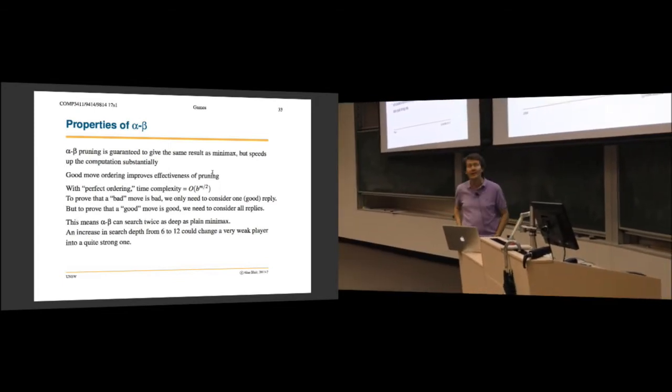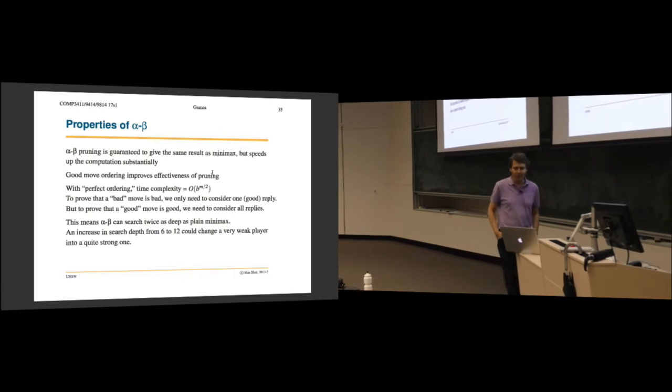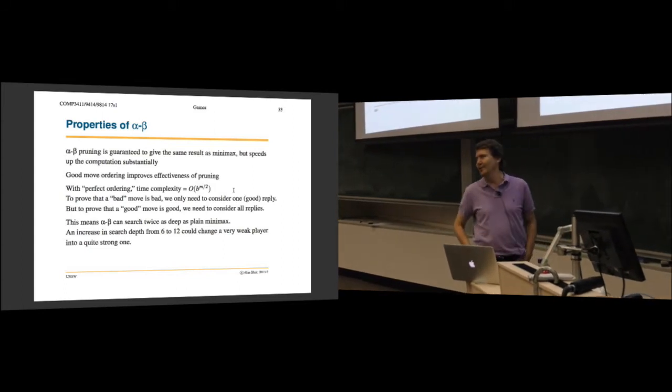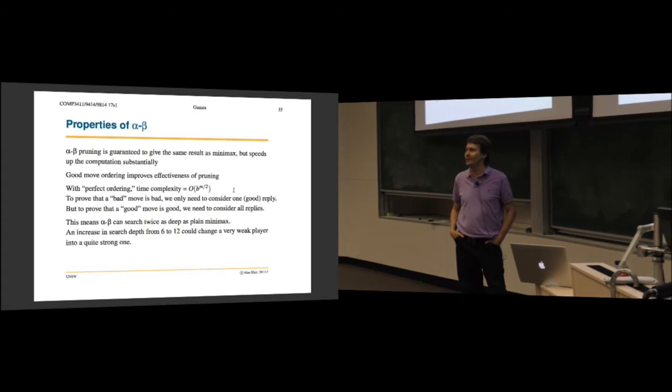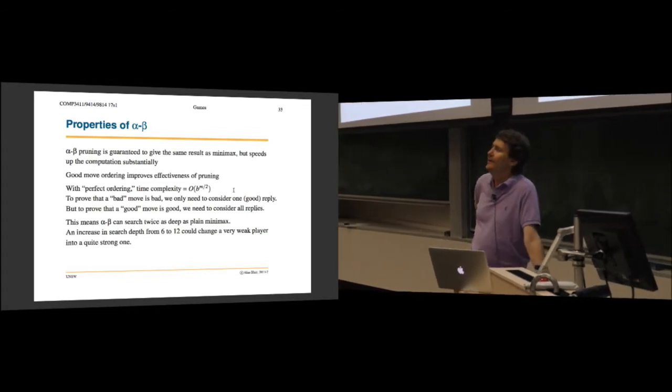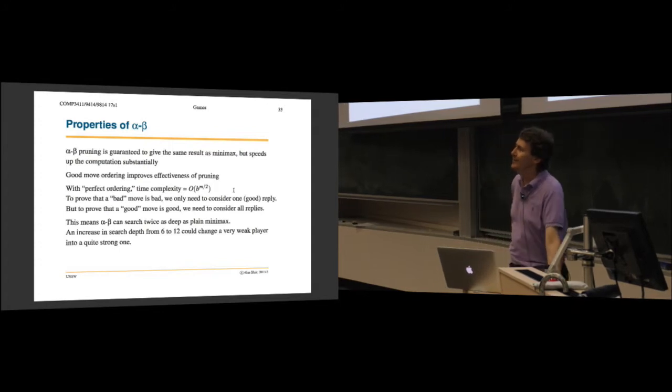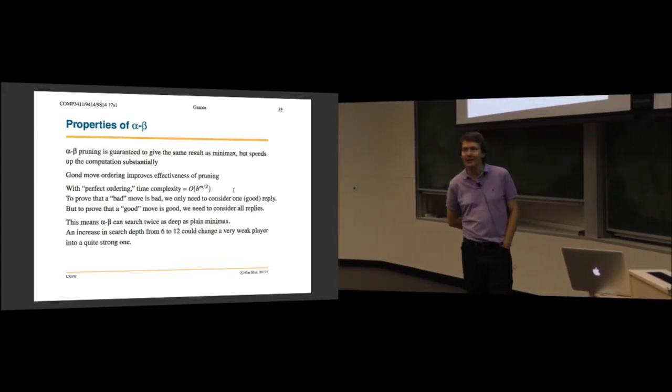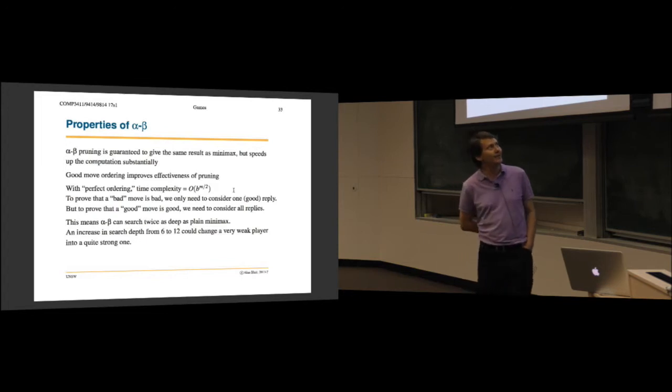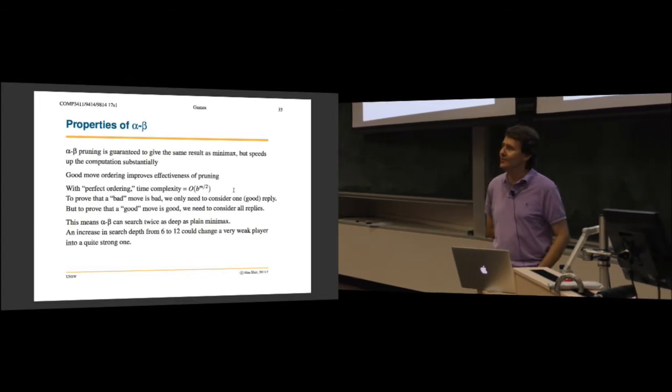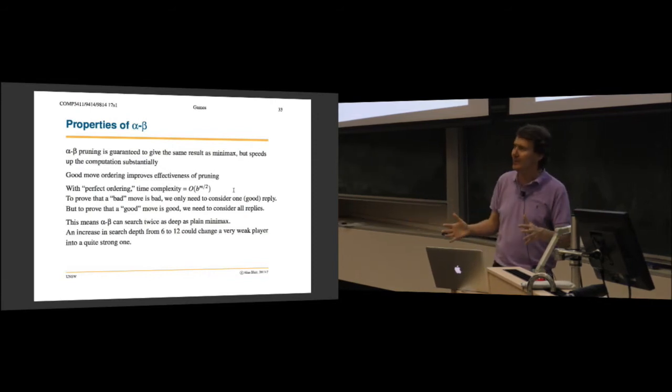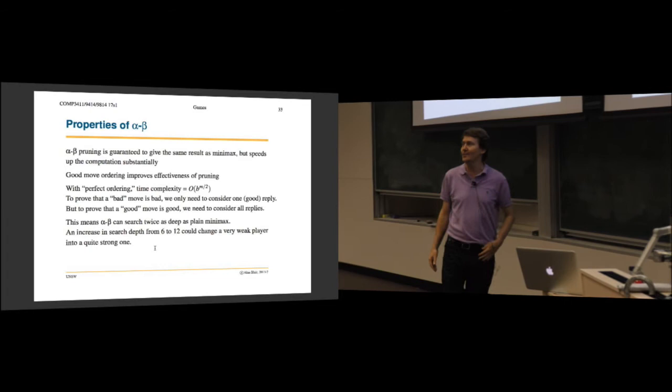We said that minimax search has complexity order b to the power m. If the moves are ordered in a good way, then the time complexity reduces to b to the power m over 2. So it's actually the square root of what it would have been otherwise. If b is 10 and m is 12, then minimax search would take 10 to the 12th, which is a trillion evaluations, but alpha-beta search may only take b to the 6, which is a million. If you reduce something from a trillion to a million, that's an enormous speedup.